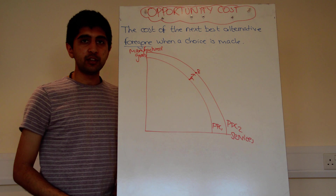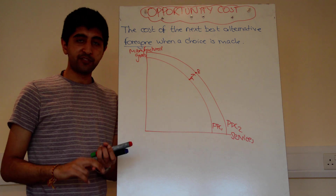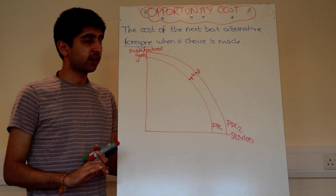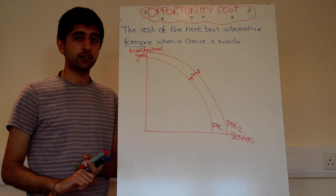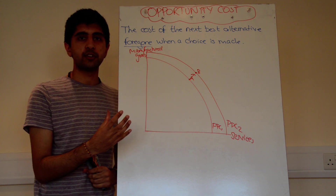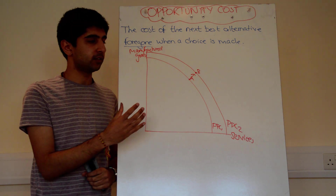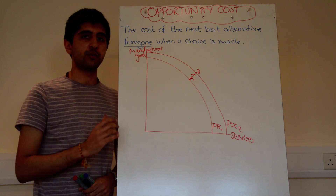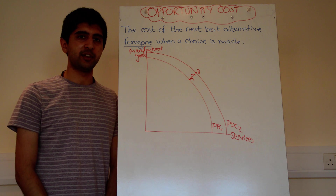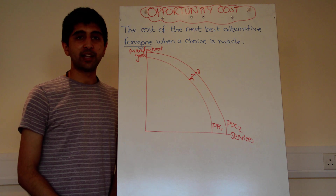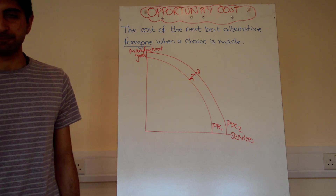That is PPCs covered. We've covered efficiency, we've covered opportunity cost, and we've covered shifts on PPCs. This is a very important concept in economics — you can expect lots of questions to involve production possibility curves. Hope you've enjoyed that, thank you very much.